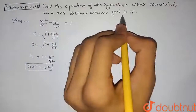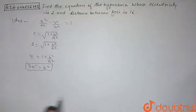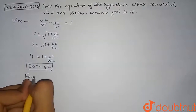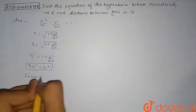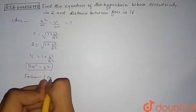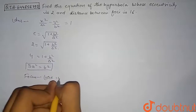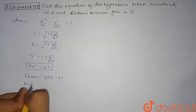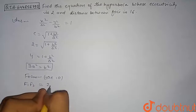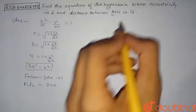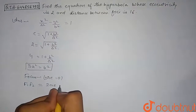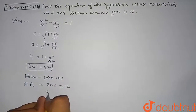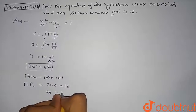Now we will use the condition that the distance between the two foci is 16. The focus coordinates for this hyperbola are (±ae, 0), so the distance between the two foci F₁F₂ = 2ae. This 2ae is given as 16.